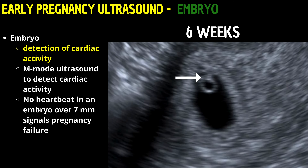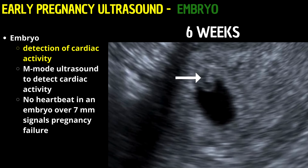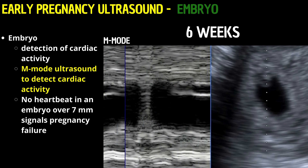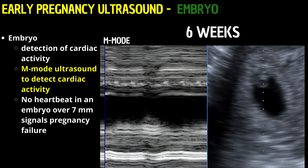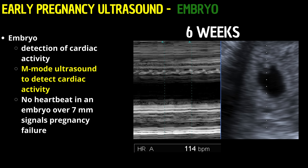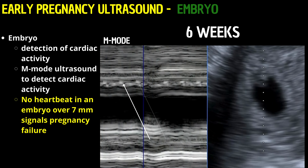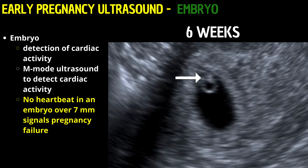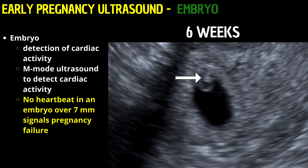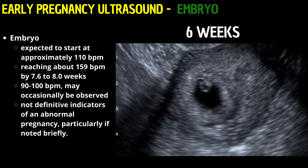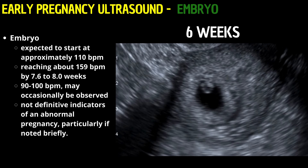Simultaneously, the detection of cardiac activity — a crucial viability indicator — is expected as the embryo reaches this size. M-mode ultrasound is utilized to detect cardiac activity, providing a real-time visualization of the embryonic heartbeat and enabling accurate heart rate measurement. The Society of Radiologists in Ultrasound, SRU, has set forth guidelines stipulating a CRL cutoff of 7 millimeters, above which fetal cardiac activity should be definitively visible on ultrasound. The absence of cardiac activity in an embryo measuring greater than 7 millimeters in length is considered diagnostic of pregnancy failure.